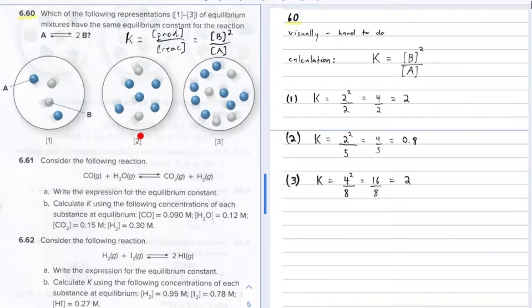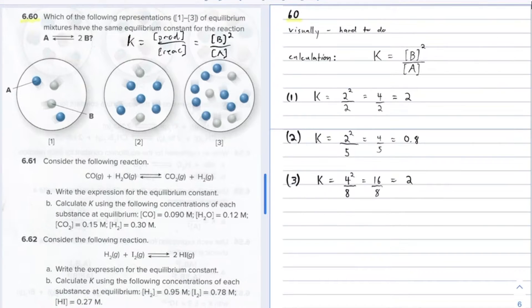For reaction mixture two, you got two B's and five A's. So that's going to be two squared over five. That'll come out to four over five, which is 0.8. Okay, so these are not equal.